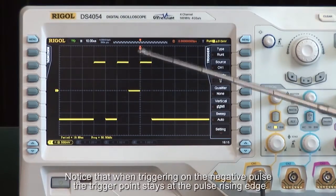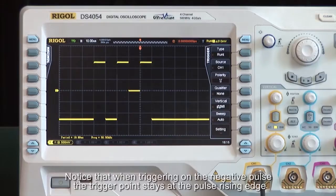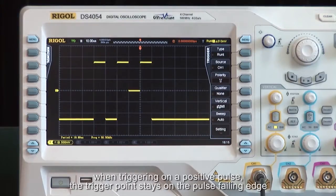Notice that when triggering on the negative pulse, the trigger point stays at the pulse rising edge. When triggering on a positive pulse, the trigger point stays at the pulse falling edge.